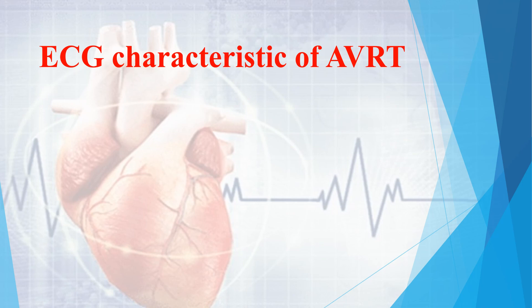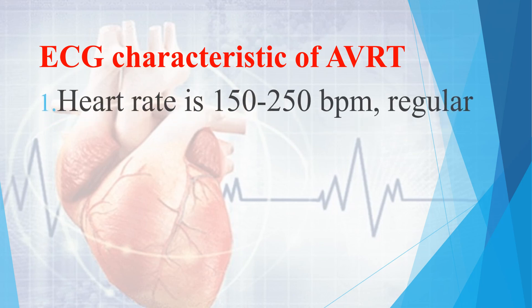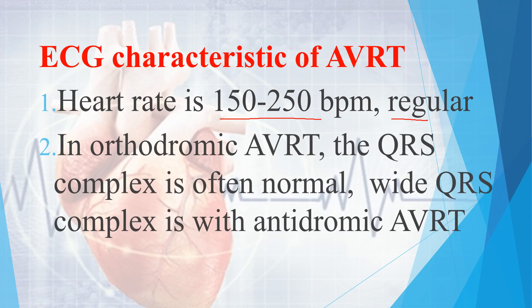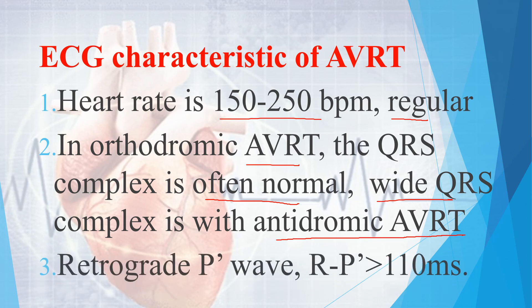The ECG characteristics of Atrioventricular Re-entrant Tachycardia: heart rate is also 150 to 250 beats per minute and the rhythm is regular. In orthodromic AVRT, the QRS complex is often normal. In antidromic AVRT, there is a wide QRS complex. The retrograde P wave, or R-to-P duration, is more than 110 milliseconds.